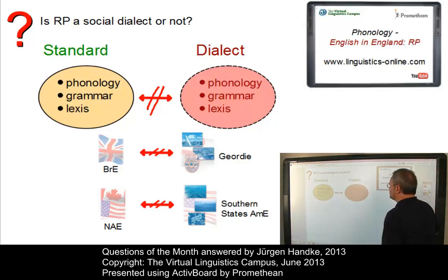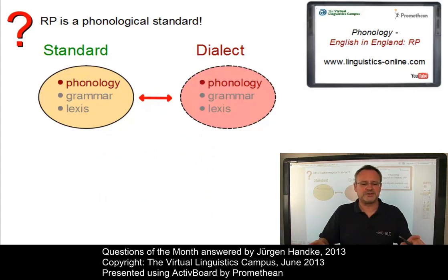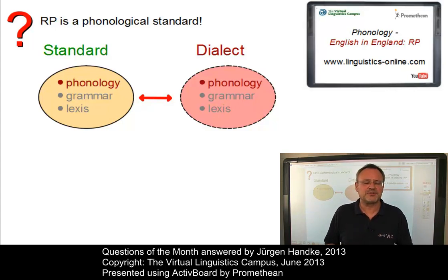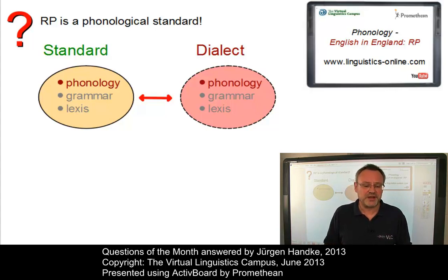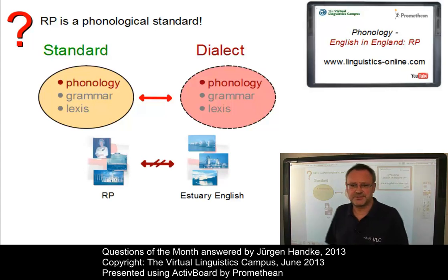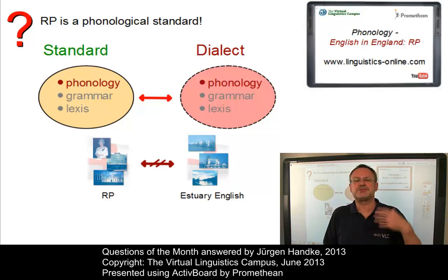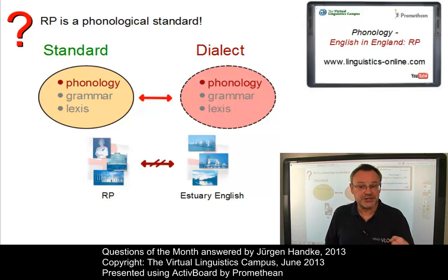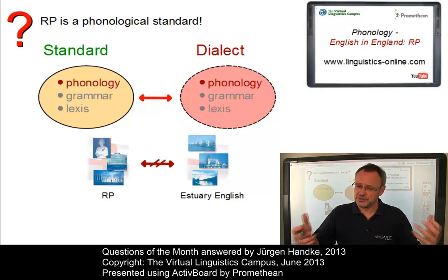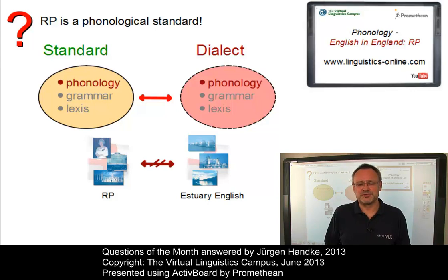If we now focus on the phonology of a variety, received pronunciation is a phonological standard of the English spoken in England. And we can define phonological variants of it, for example Estuary English. Estuary English mainly differs from received pronunciation in terms of phonology. Hence, it can be defined as a phonological dialect or, if you prefer, an alternative slightly outdated term, as an accent of received pronunciation.